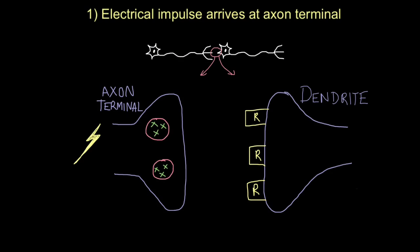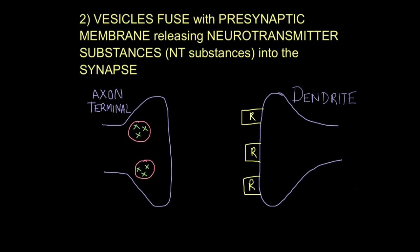So the first part is easy enough. An electrical impulse arrives at the axon terminal. Now inside the axon terminal, we will find structures called vesicles. Vesicles are like capsules made out of the same stuff cell membranes are made from. And inside they basically hold proteins called neurotransmitter substances. So when an electrical impulse arrives, it stimulates the vesicles to move towards the end of the axon terminal.